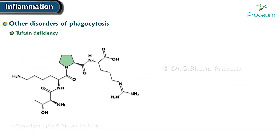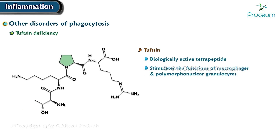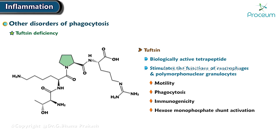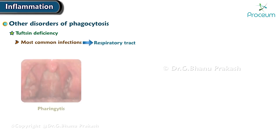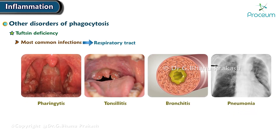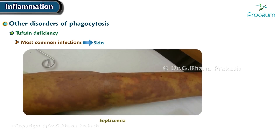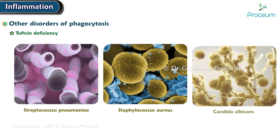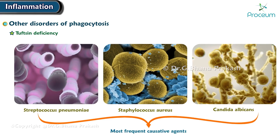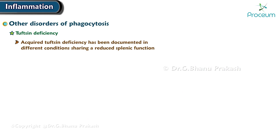Tuftsin deficiency is another disorder affecting phagocytosis. Tuftsin is a biologically active tetrapeptide that stimulates the functions of macrophages and polymorphonuclear granulocytes, such as motility, phagocytosis, immunogenicity, hexose monophosphate shunt activation, and bactericidal and tumoricidal activities. The most common infections involve the respiratory tract — including pharyngitis, tonsillitis, bronchitis, and pneumonia — as well as skin infections, and can be complicated by septicemia. Streptococcus pneumoniae, Staphylococcus aureus, and Candida albicans are the most frequent causative agents. Acquired Tuftsin deficiency has been documented in conditions sharing a reduced splenic function.